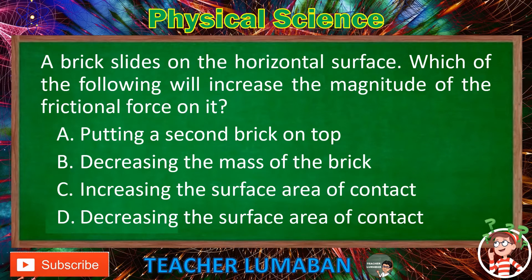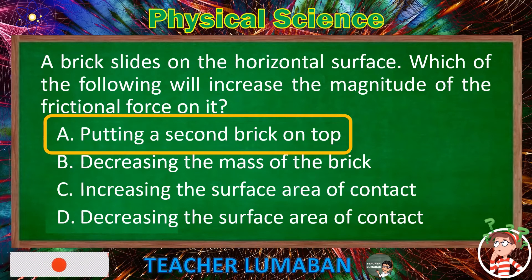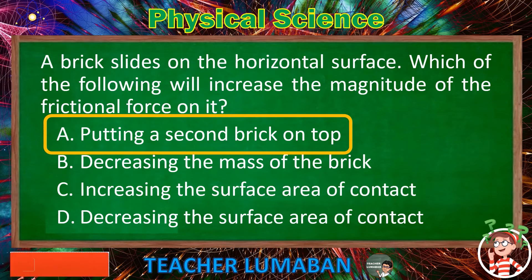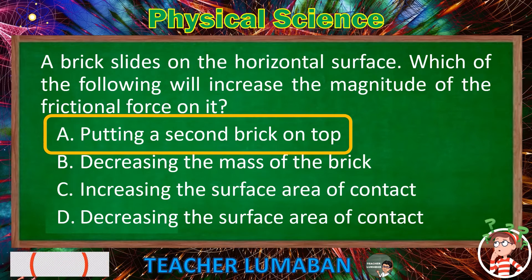The correct answer is letter A — Putting a second brick on top. A brick slides on a horizontal surface; putting a second brick on top will increase the magnitude of the frictional force on it.